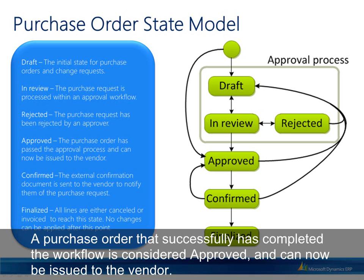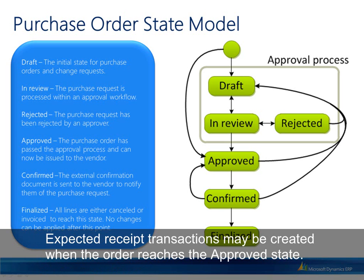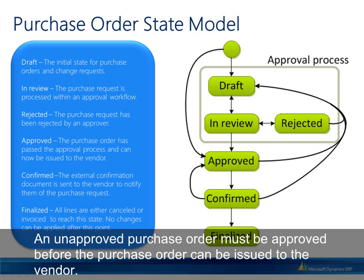A purchase order that has successfully completed the workflow is considered approved and can now be issued to the vendor. Expected received transactions may be created when the order reaches the approved state. An unapproved purchase order must be approved before it can be issued to the vendor.